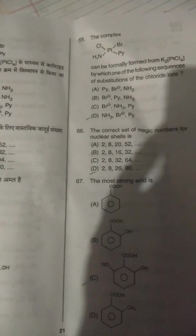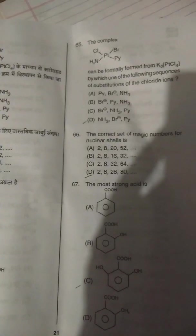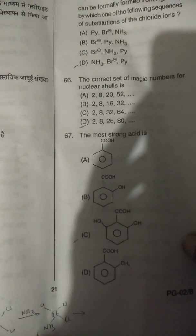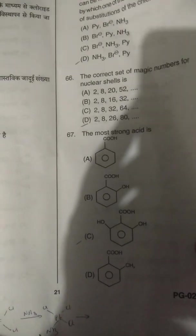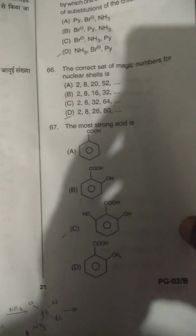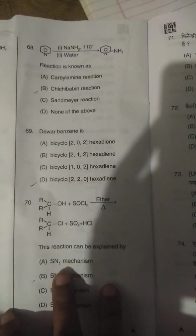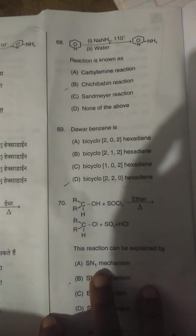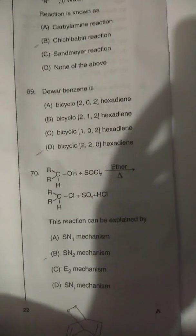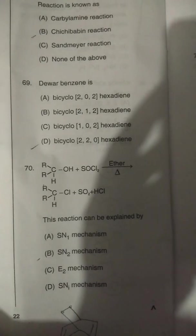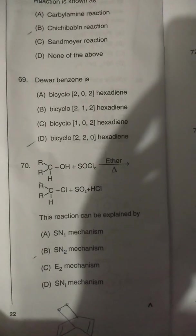Question number 65: answer is option D. The most strong acid, according to me, is option C. Question on Chichibabin reaction: option is B. Question 69: Divar benzene is 2,2,0-hexadiene, so option is D. Question 70: I think it is SN2 mechanism, so option is B.